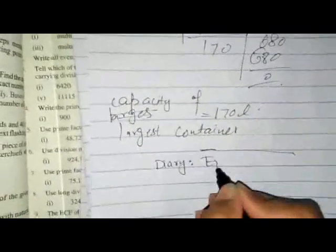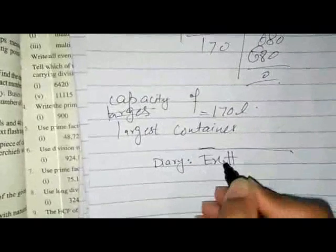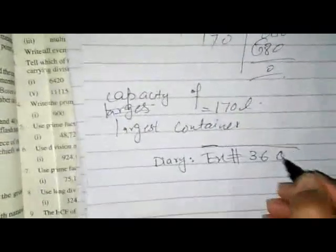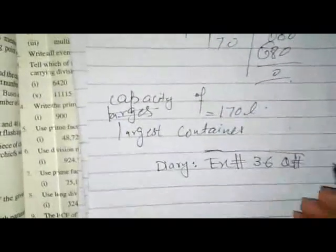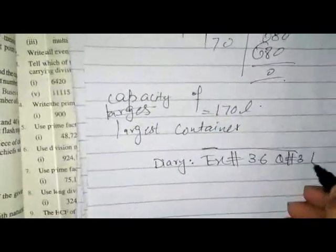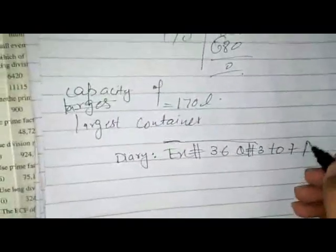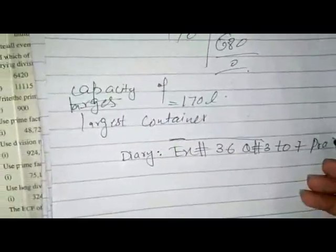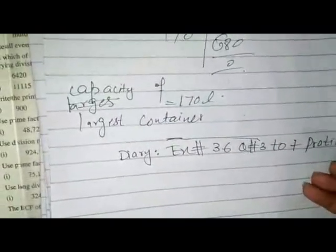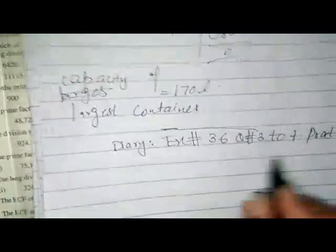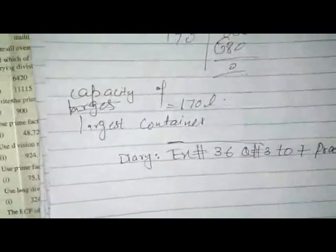So the capacity of the largest container is 170 liters. Our questions are complete — Exercise 3.6, Questions 3 to 7. Thank you, students.